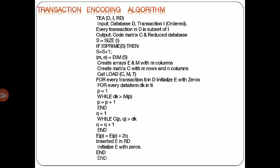Here is the actual algorithm of the Transaction Encoding. It takes the input database D and the transaction I in the ordered format. Every transaction in D is a subset of I. The output algorithm gives us the output as a code matrix C and the reduced database. In this reduced database, we actually find the strings or items with the maximum frequency. S is the variable which stores the size.